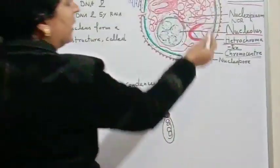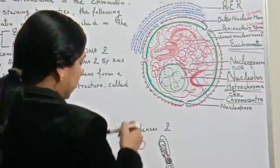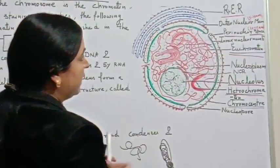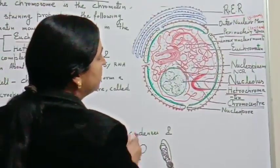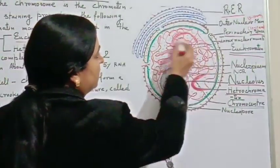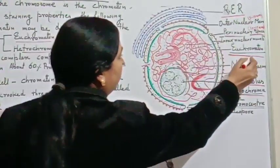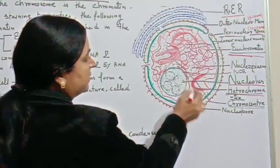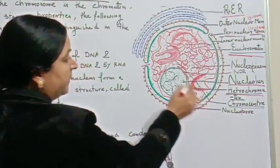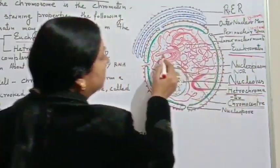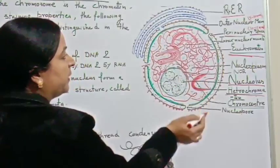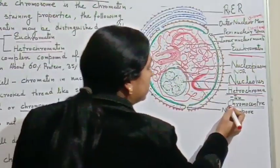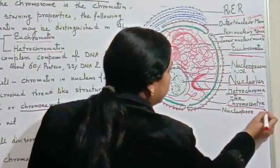You can see that the lightly stained structure is euchromatin, while the dark structure is heterochromatin. There is also a region of heterochromatin which is called the chromocenter.